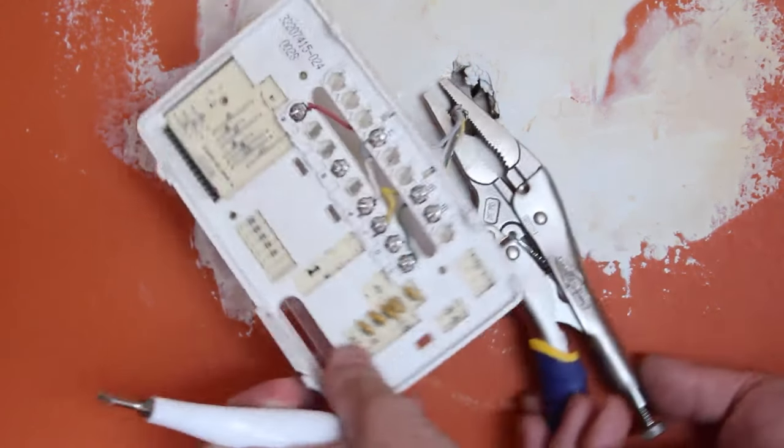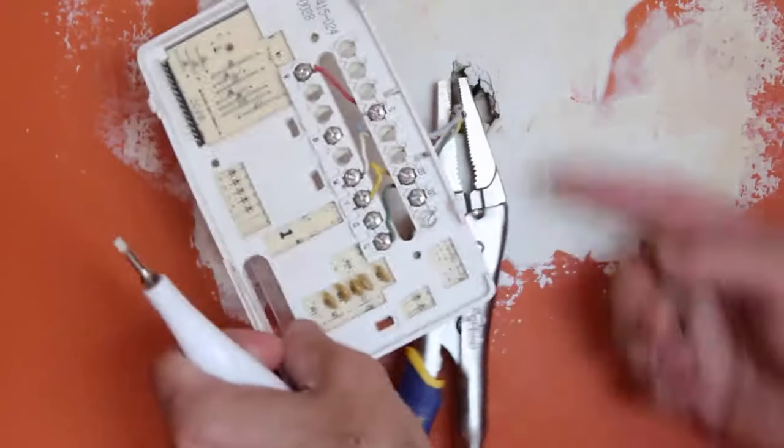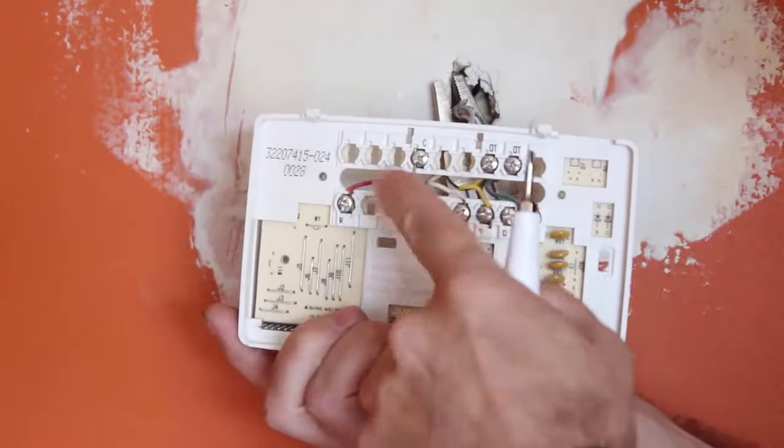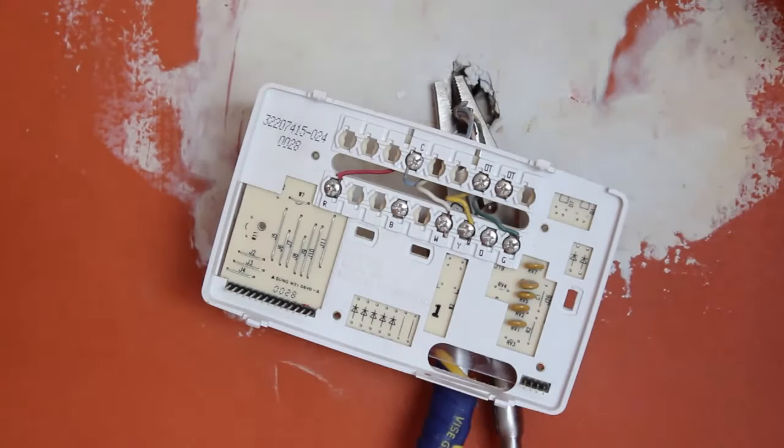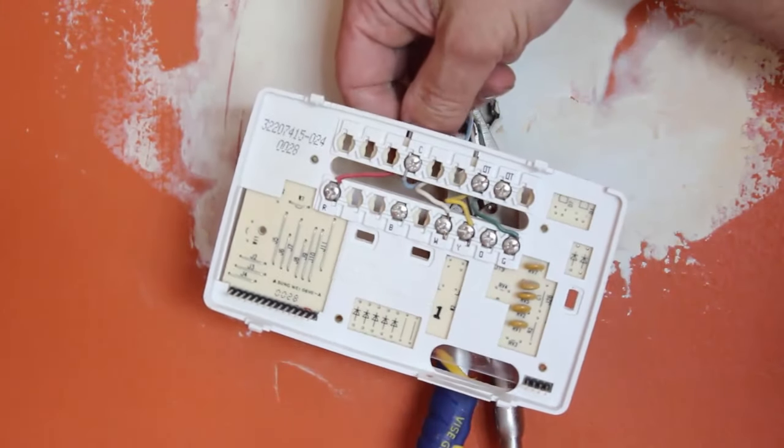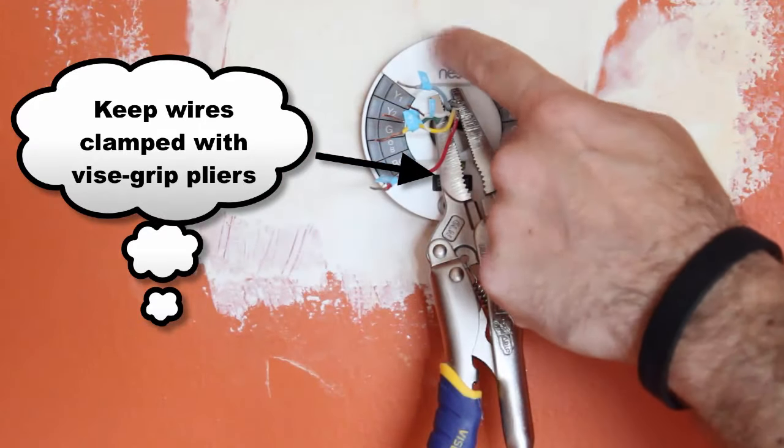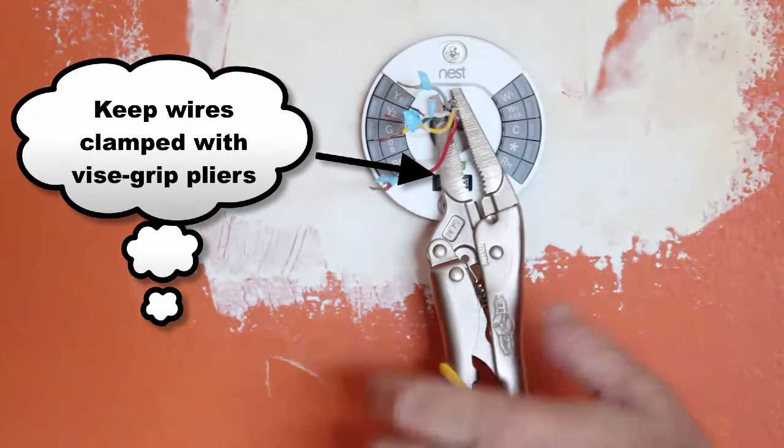With my vise grip in place and holding the wires from going back into the wall, I can remove all the wires. But first, what you want to do is label them. So the Nest comes with labels already. So what you do is you put these labels on the wires.